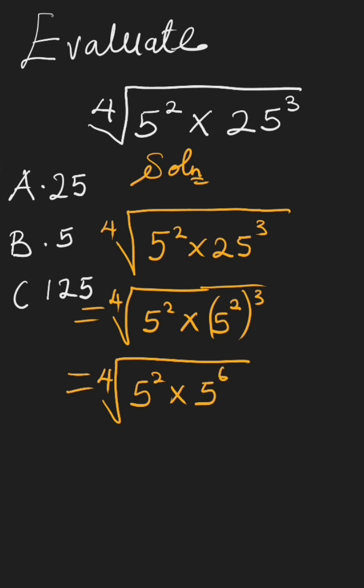And in the law of indices, when we have a raised to the power of m times a raised to the power of n, it equals a raised to the power of m plus n. If we apply that where a is 5, this will change to fourth root of 5 raised to the power of 2 plus 6.